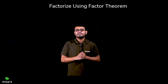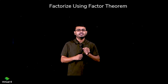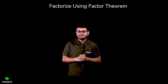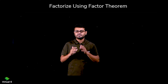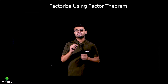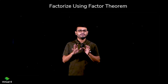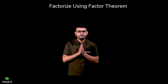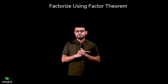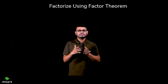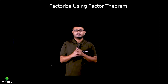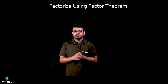So far we learned how to factorize with the help of middle term splitting. Now we are going to factorize quadratic polynomial first, then cubic, with the help of the factor theorem. The factor theorem states: if you substitute a number into the polynomial and get zero, then it is a factor. If you don't get zero, then it is not a factor.